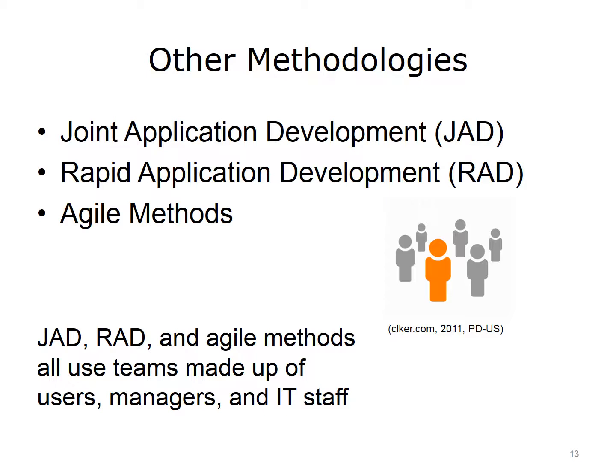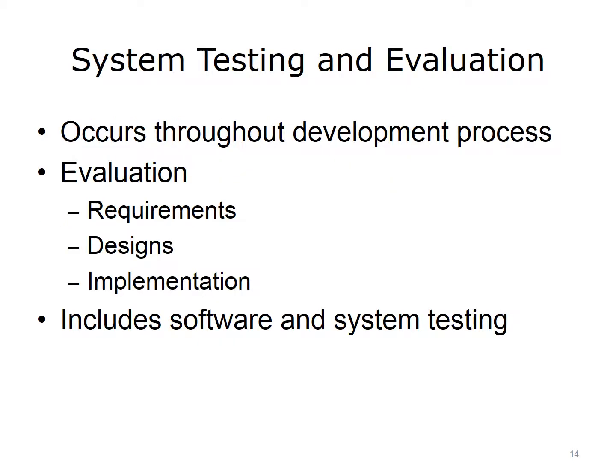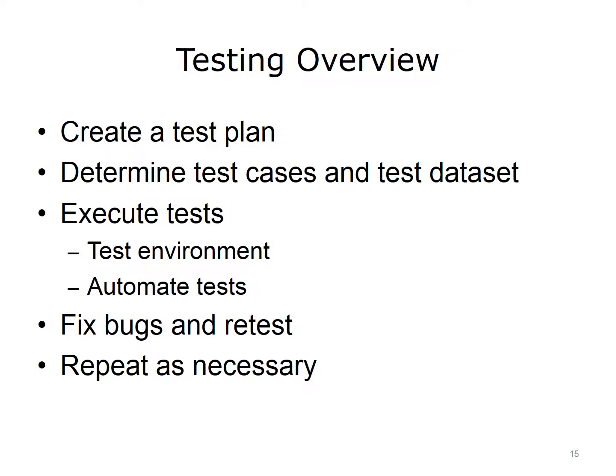Agile methods break tasks into small increments with minimal planning and do not directly involve long-term planning. Testing and evaluation of an information system's performance occurs throughout all stages of its development. In the beginning, the project is evaluated for feasibility. As the development process continues, requirements are evaluated for completeness and appropriateness. The designs are evaluated using simple prototypes. Most system development methodologies used today require iterative development with repetitive testing and evaluation at each stage. After the system is implemented, the software and the entire system can be tested.